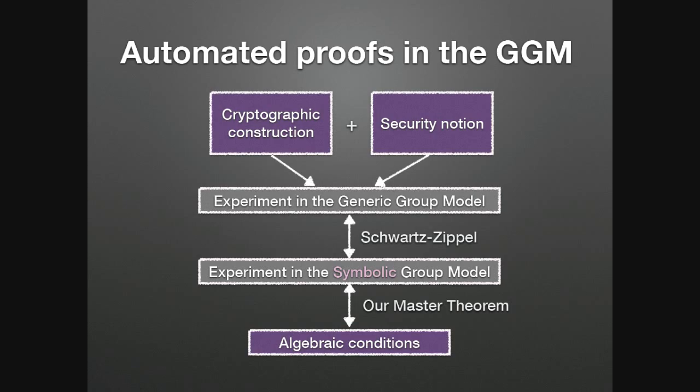In automated proofs in the generic group model, the security experiment is translated into algebraic conditions, and these conditions can be checked automatically. The important thing is that we can derive security by analyzing these conditions without relying on additional assumptions as in the standard model. In fact, in the generic group model you can directly prove security by analyzing these conditions.